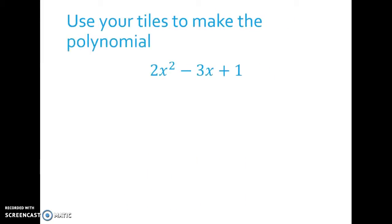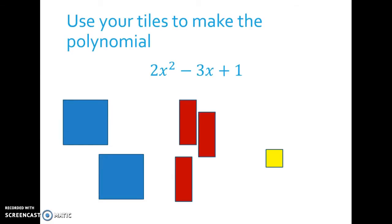Think about how you would make this polynomial using your tiles. If you have a bag of tiles, go ahead and do it. If you don't have a bag of tiles, at least think about what it would look like. And what it would look like is you'd have two of the square tiles, the big squares. You'd have three of the skinny rectangles, but they'd be turned over to the red side because they're negative, and you'd have one unit or small square tile.